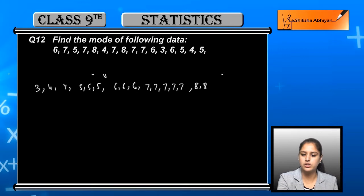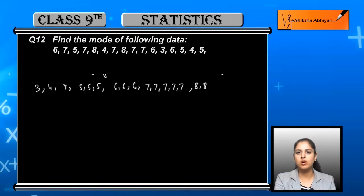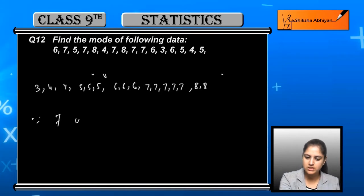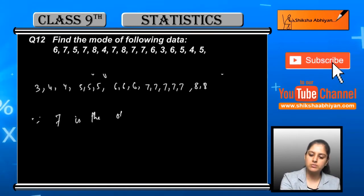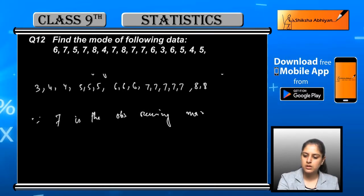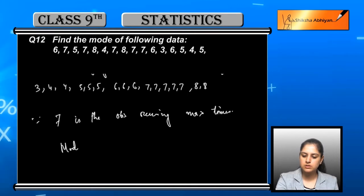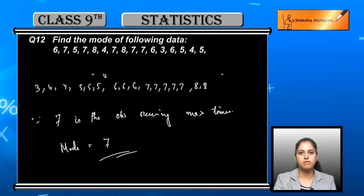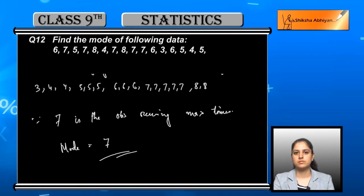Now let us see which number occurs the maximum times. You will see that 7 is the observation occurring maximum times, so mode is equal to 7.